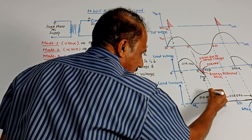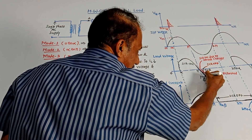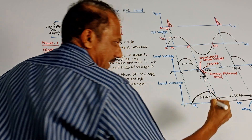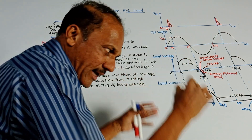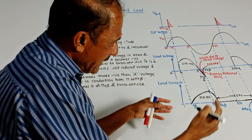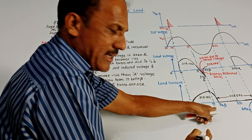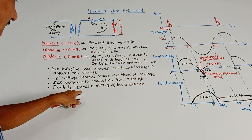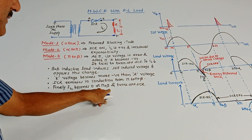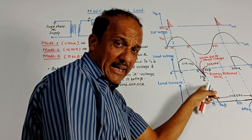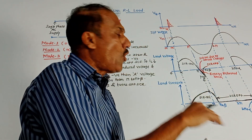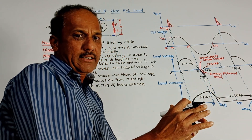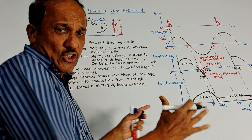From pi onwards up to pi plus beta, SCR will be in conduction mode and load current will try to decrease. Once all the energy stored by the inductor is returned back to the source, load current becomes zero and SCR will be turned off. Finally, IL becomes zero at pi plus beta and SCR turns off. The value of beta depends on the value of the inductor — this parameter beta is decided by the inductance value.